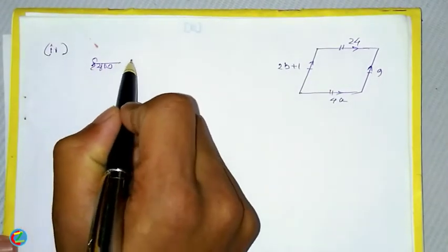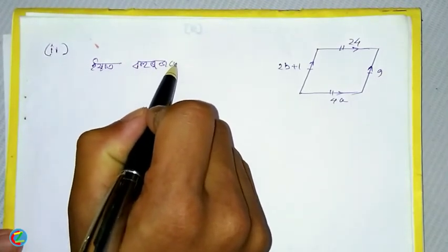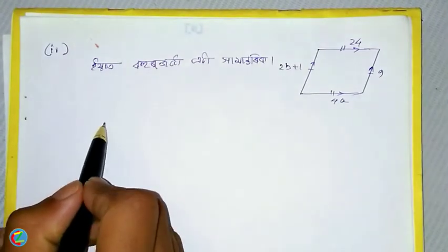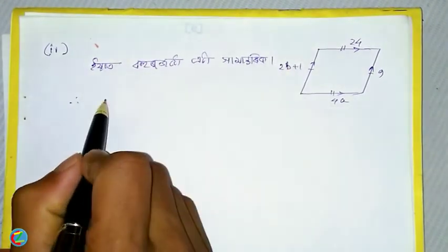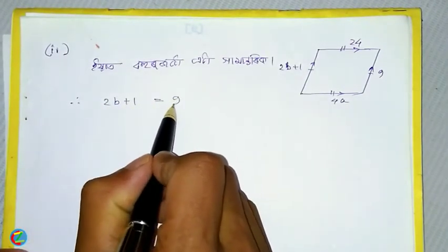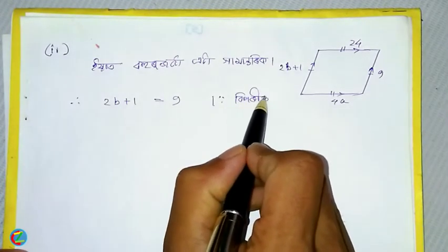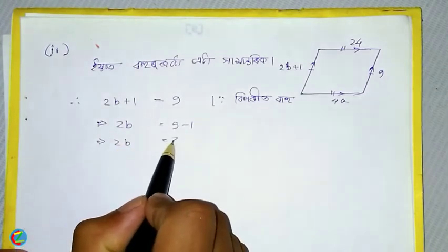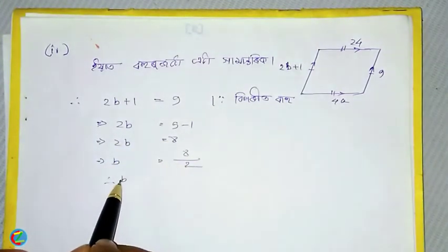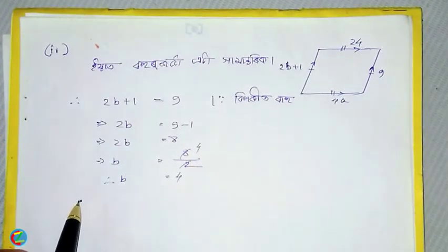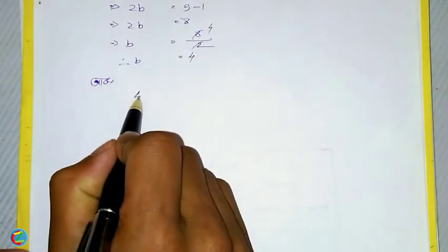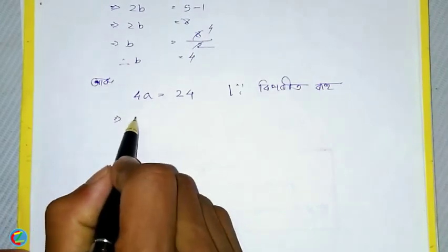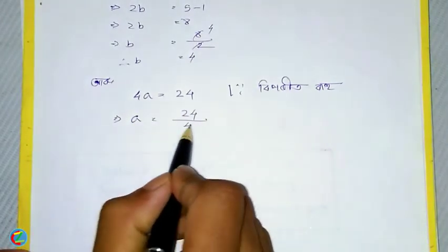Looking at this problem, we have 2b plus 1 equals 9. If I work with 2b plus 1 equals 9, then 2b equals 9 minus 1, so 2b equals 8, and b equals 4.